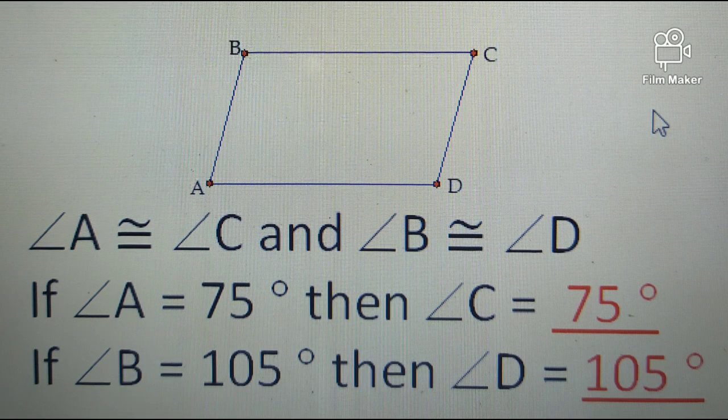Same with angle B and angle D. Whatever the measure of angle B is, since they are opposite angles with angle D, that will also be the measurement of angle D. So if angle B is equal to 105 degrees, then angle D is equal to 105 degrees.